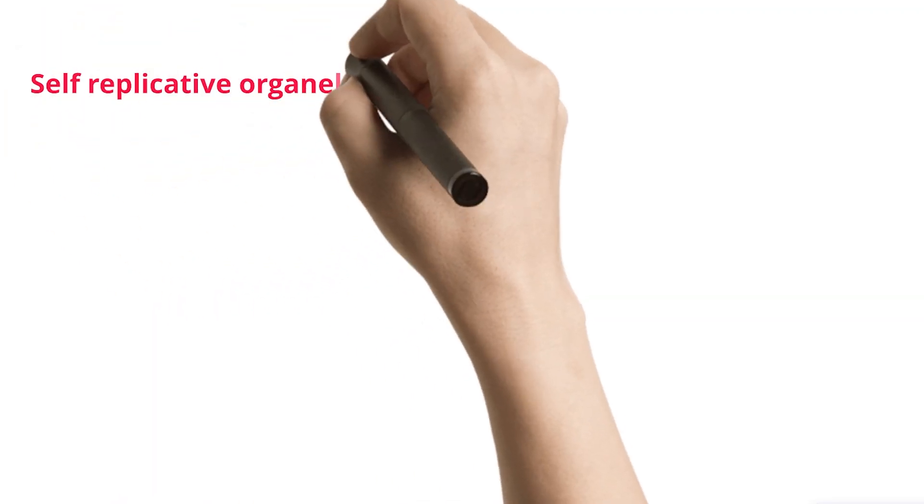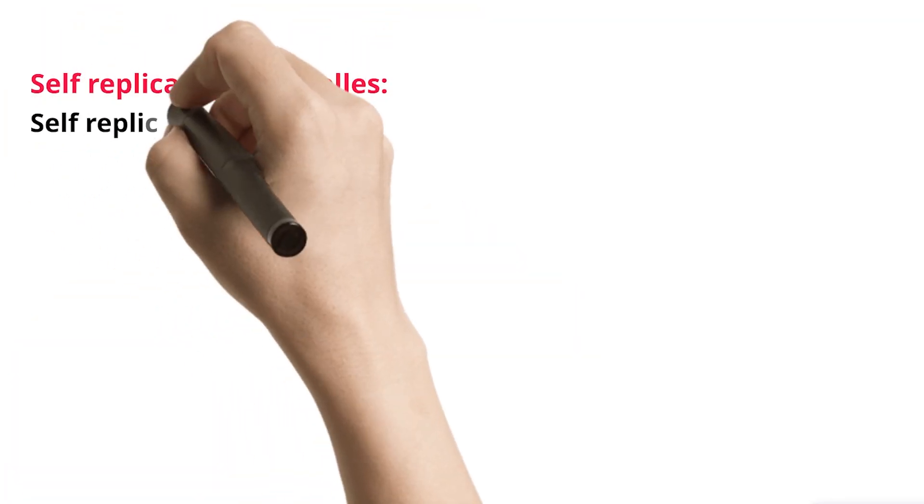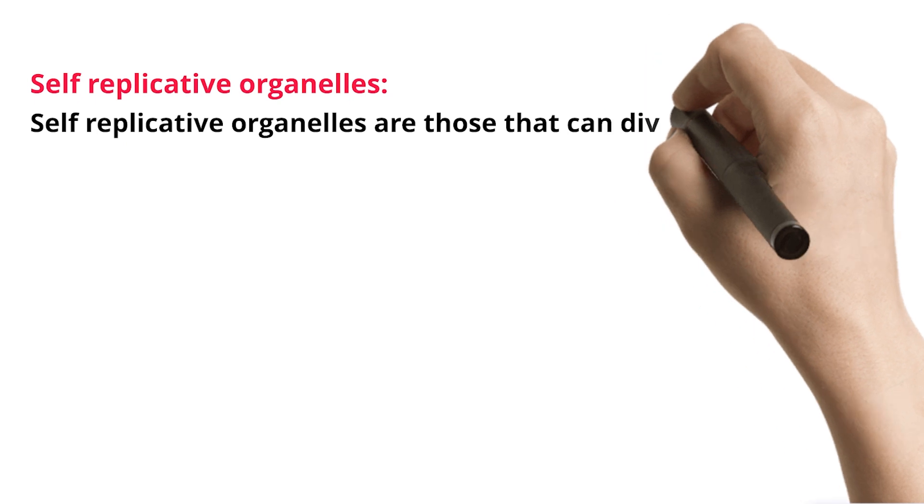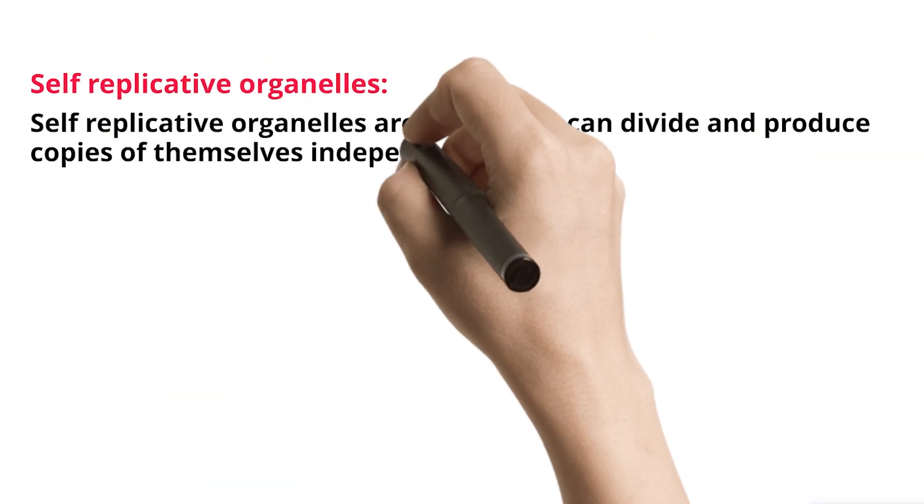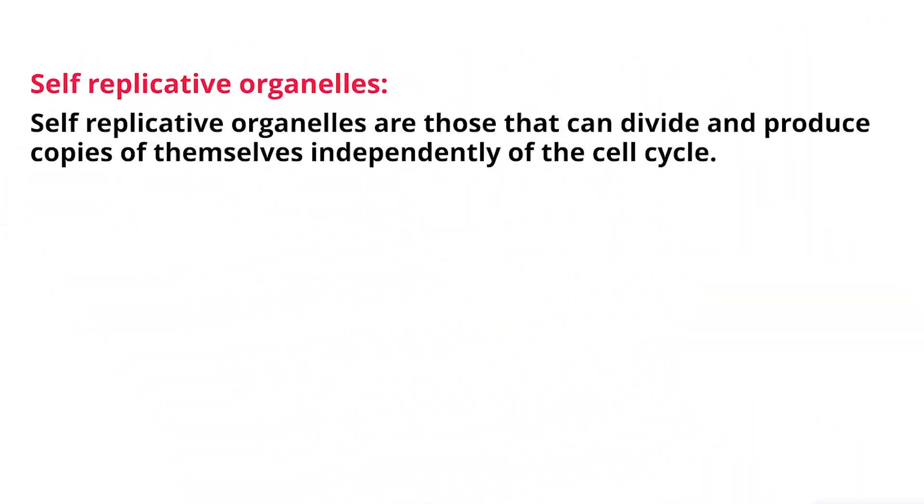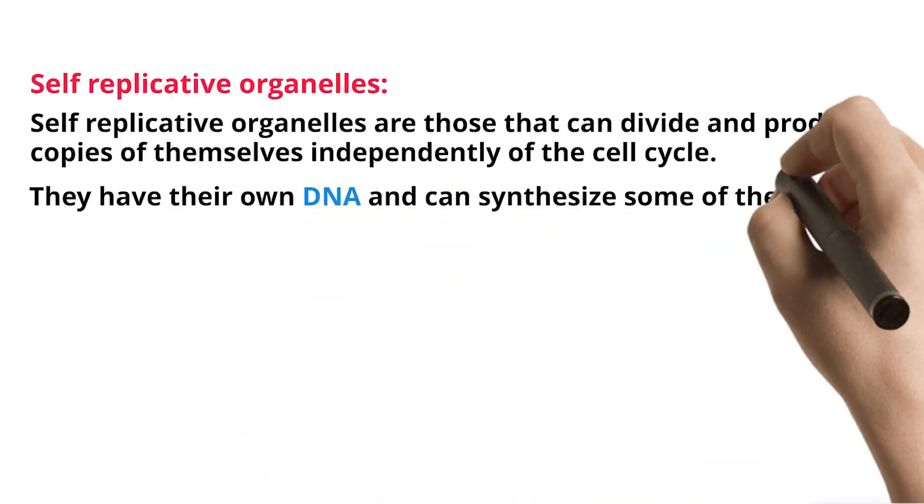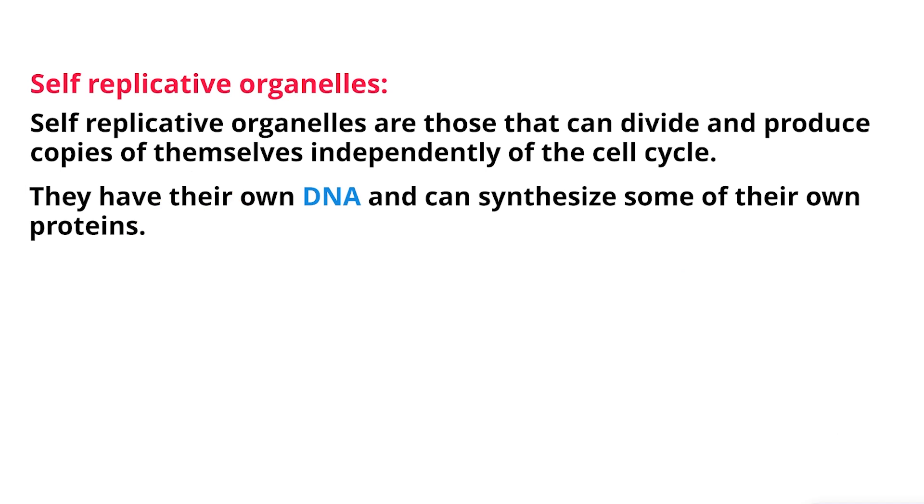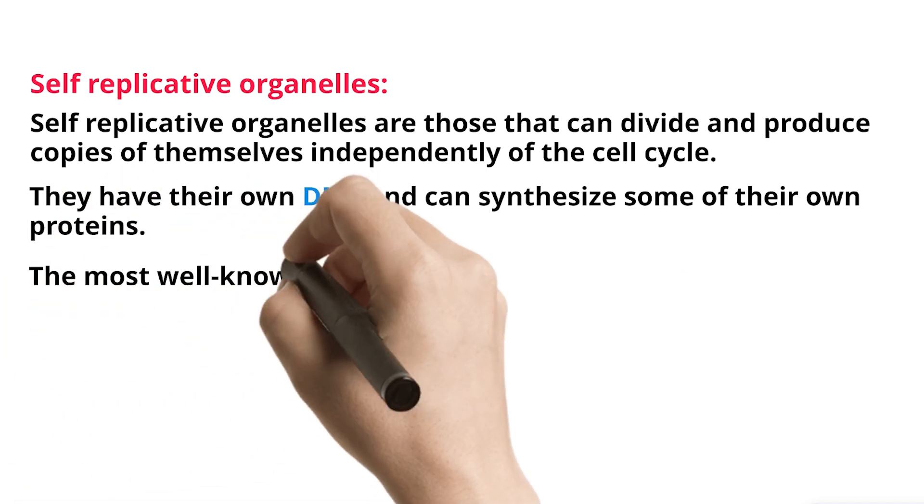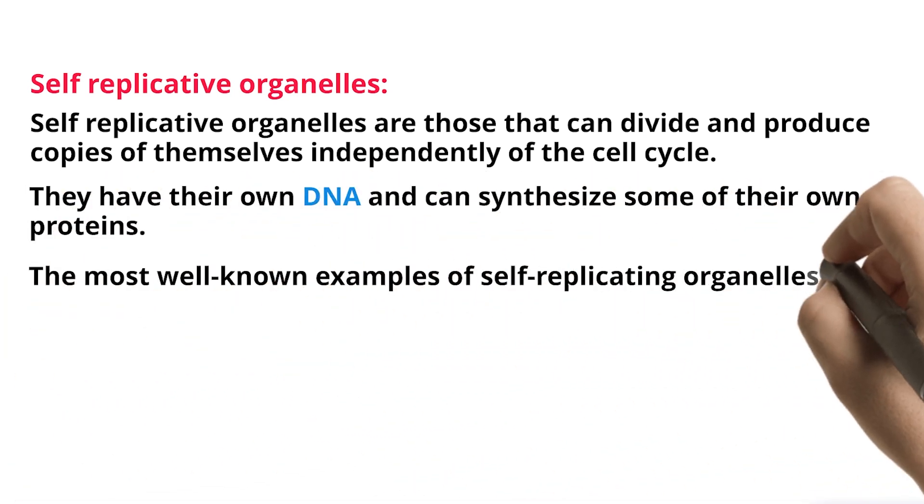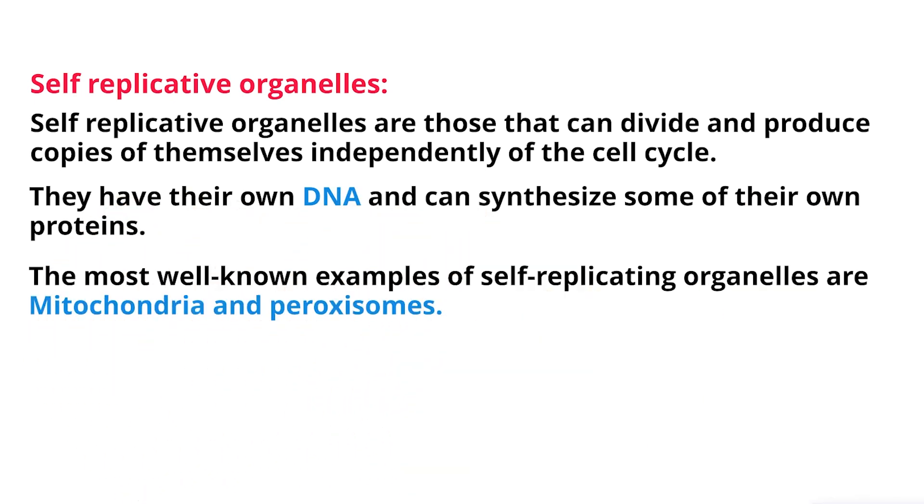Self-replicative organelles. Self-replicative organelles are those that can divide and produce copies of themselves independently of the cell cycle. They have their own DNA and can synthesize some of their own proteins. The most well-known examples of self-replicating organelles are mitochondria and peroxysomes.